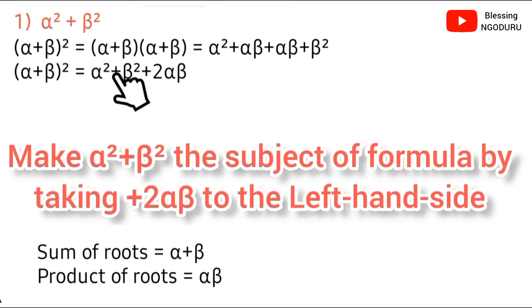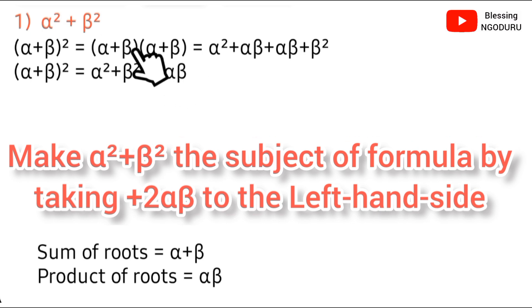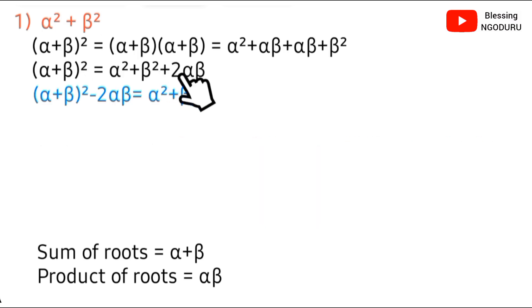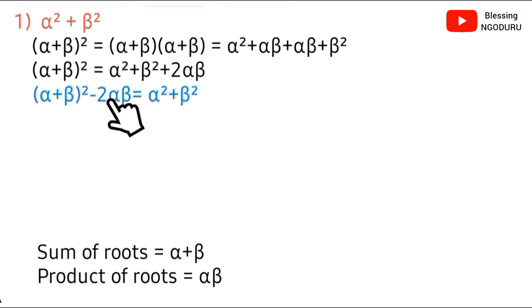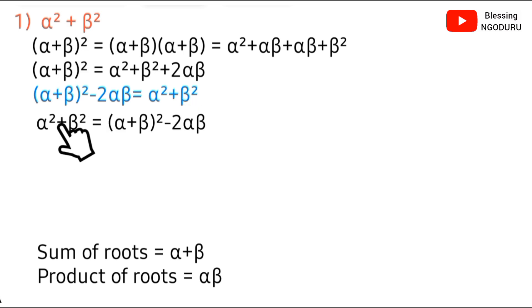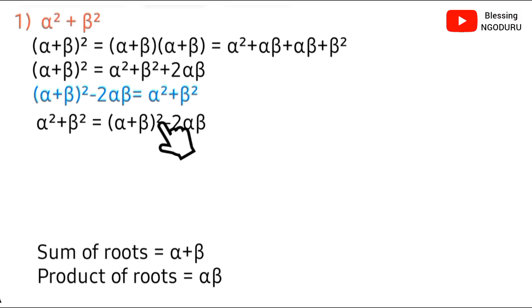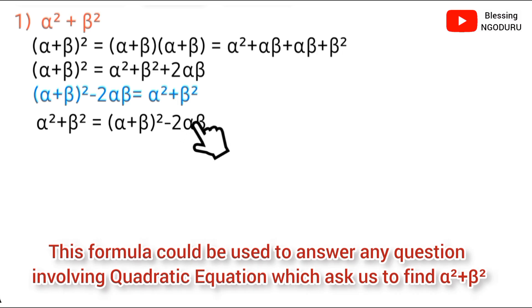We make α²+β² the subject of the formula by taking the positive 2αβ to the left-hand side, which gives negative 2αβ. Therefore, α²+β² = (α+β)² − 2αβ. We have derived the first formula, expressing α²+β² in terms of the sum of roots (α+β) and the product of roots (αβ).